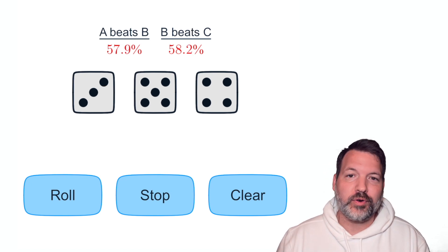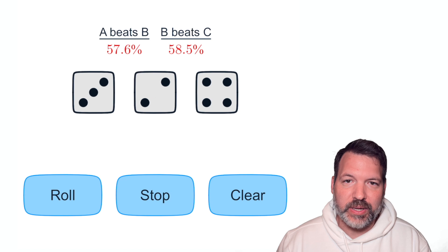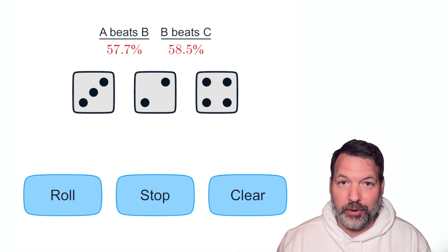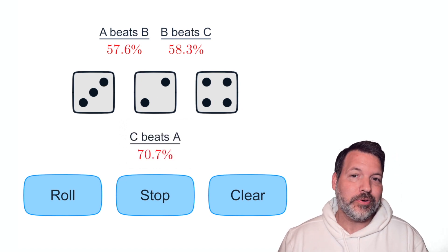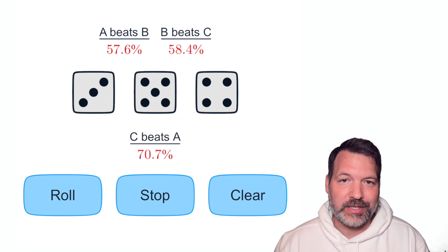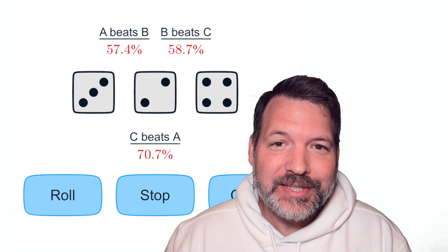For example, I can tell you the one on the left, which I'm gonna call die A, beats the one in the middle, which I'm gonna call die B, about 58% of the time. In fact, for that matter, die B beats die C, that's the one on the right, also about 58% of the time. And I'm gonna let you pick which of these three dice you want to roll, and then I'll pick another one. A clever person like yourself, of course, you can see A beats B, B beats C. The best move is to pick A, right?